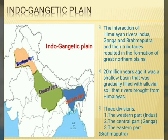Indo-Gangetic Plains broadly consist of three divisions: the western part, the central part, and the eastern part. Let us learn more about each of these parts.